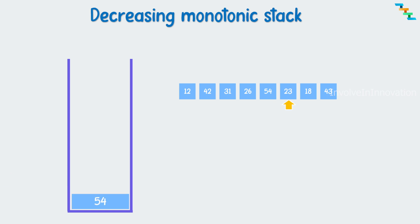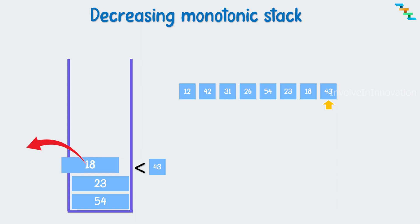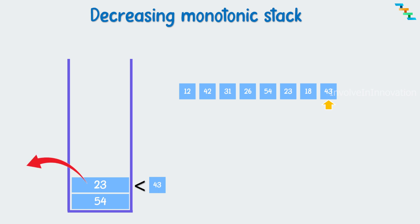Check if the next element 23 is less than the top of the stack 54. Yes, so add 23 on top of 54. Check if the next element 18 is less than the top 23. Yes, add 18 on top of 23. Check if the next element 43 is less than the top 18. No, so pop 18. Check if the top 23 is greater than 43. No, so pop 23. Check if the top 54 is greater than 43. Yes, add 43 on top of 54. This is how we can construct the decreasing monotonic stack.